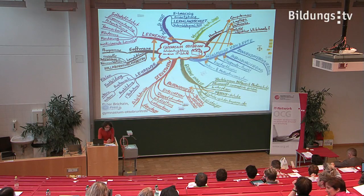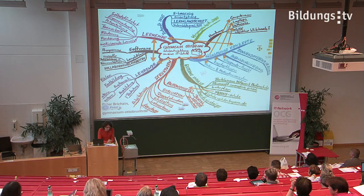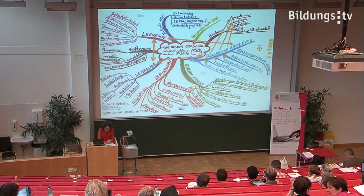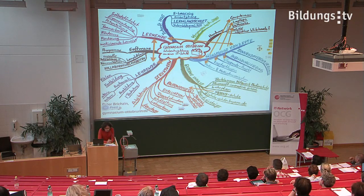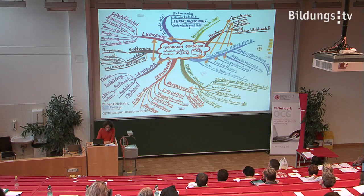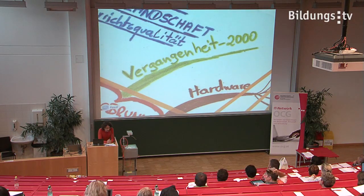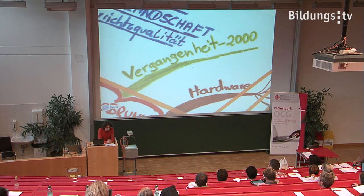Preparing this talk I used a mind map. It shows a bit of the complexity of school development. I will start first with some facts about the school I'm working at. The Gymnasium Otto-Brunn, a high school near to Munich, has about 1400 pupils and more than 100 teachers.